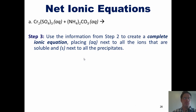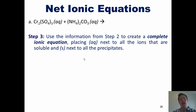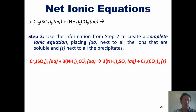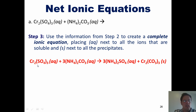Having done that, we move on to step three, which says to use the information from step two to create a complete ionic equation — placing AQ next to everything soluble in water and S next to everything that isn't. Chromium sulfate is soluble, ammonium carbonate is soluble, ammonium sulfate is soluble, but chromium carbonate is not. We now saw in half every single one of these soluble compounds. Let's start with chromium sulfate.